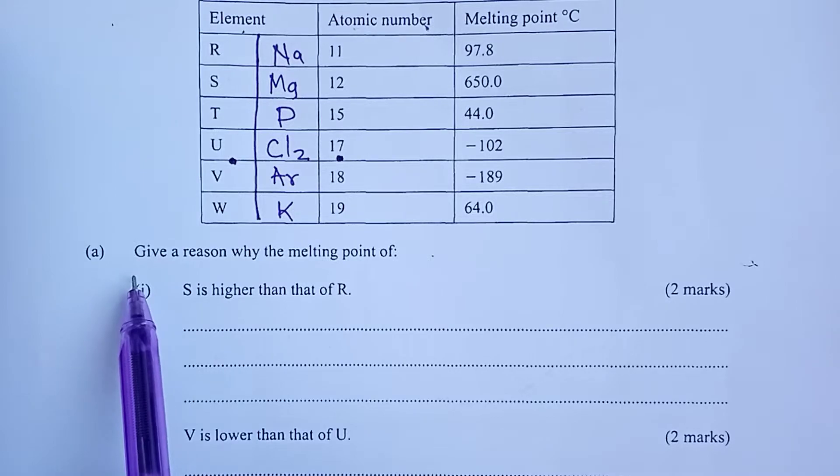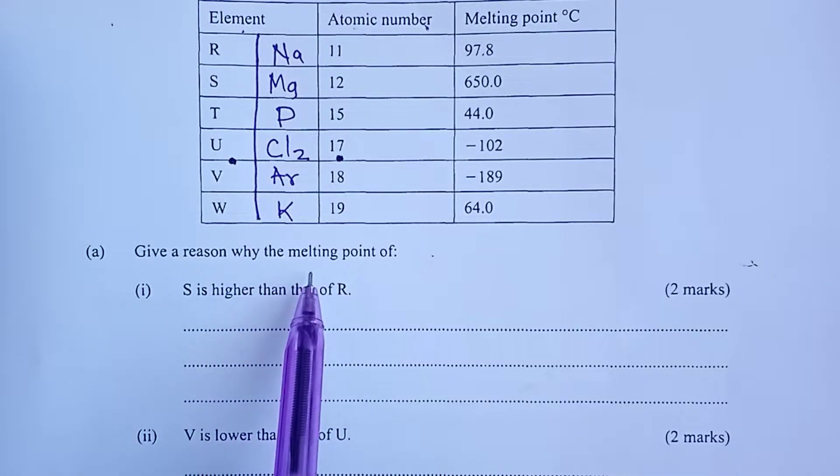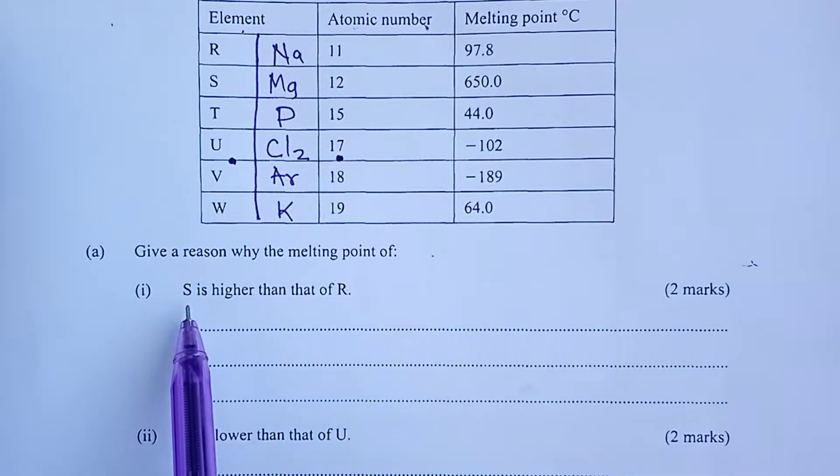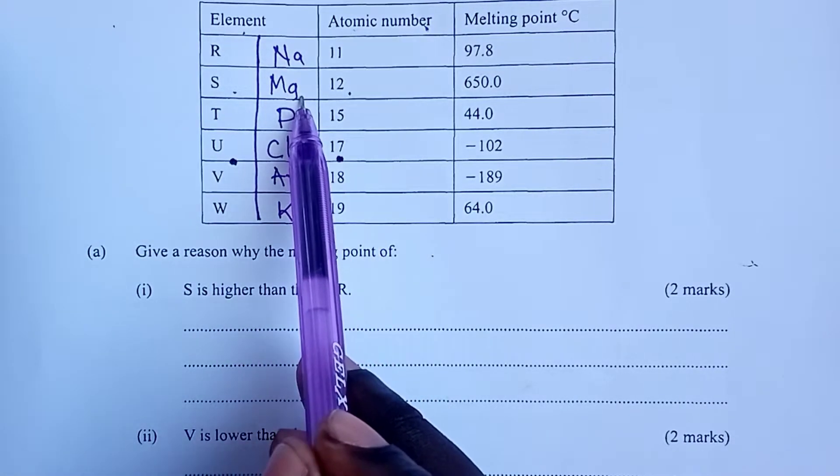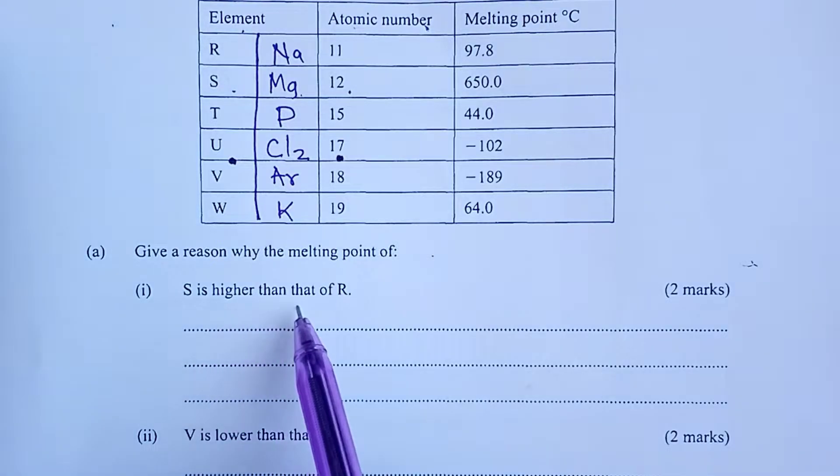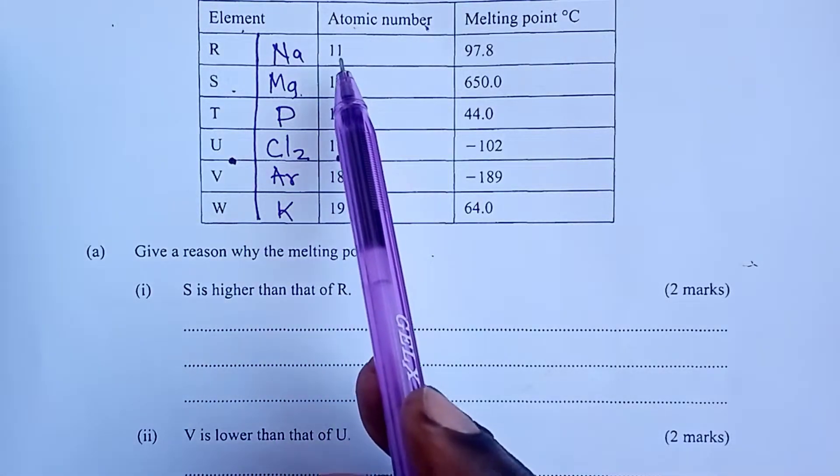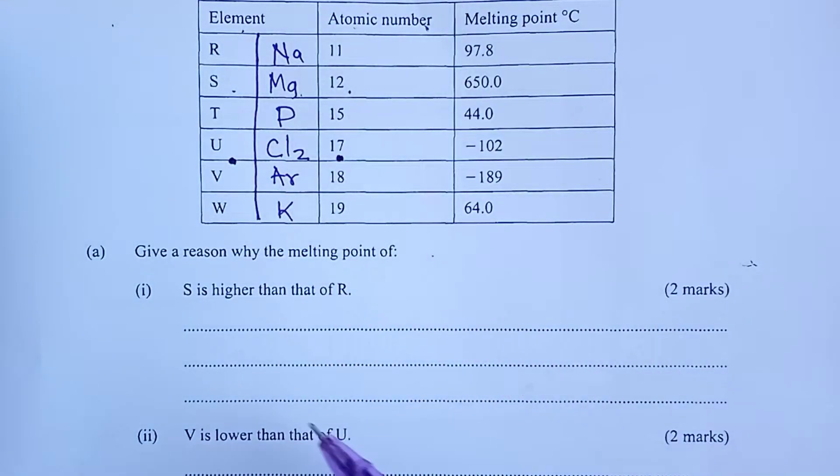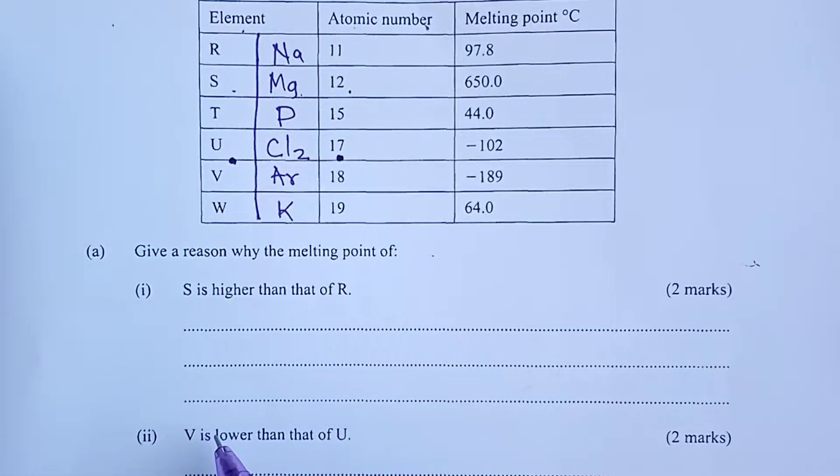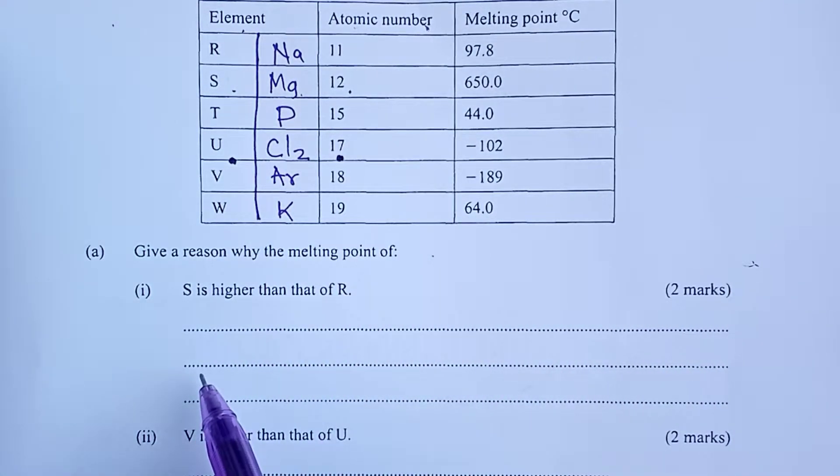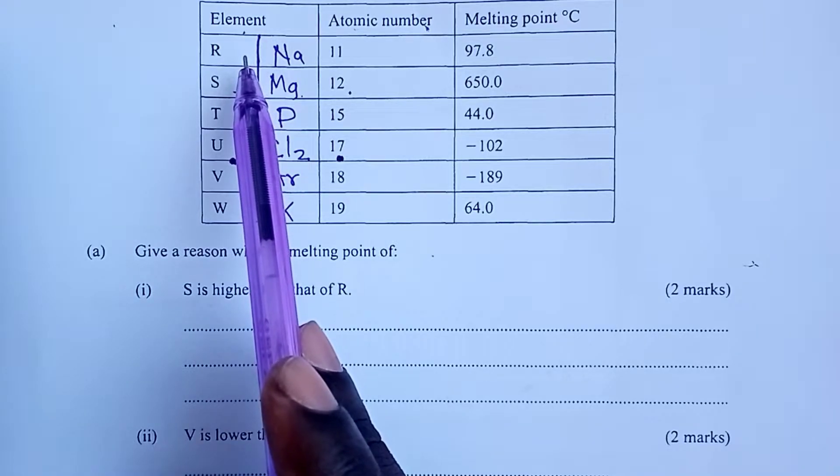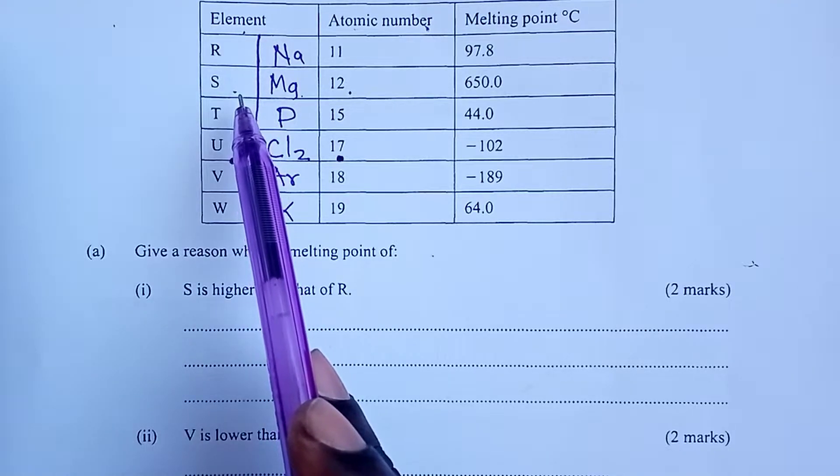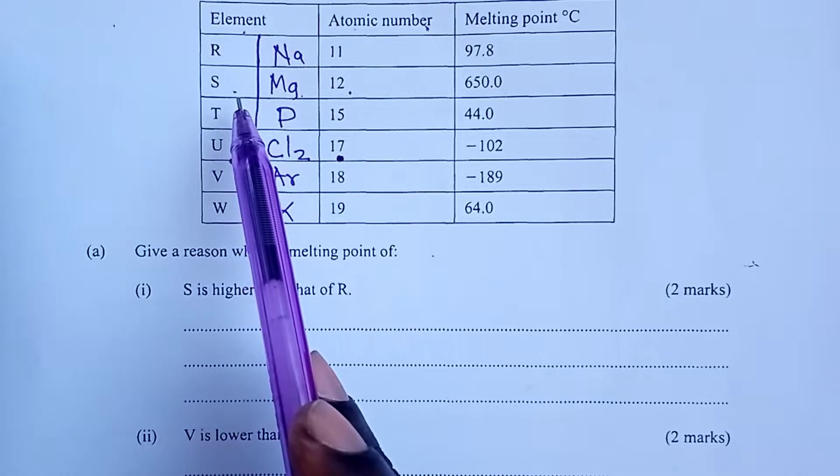The first question was: give a reason why the melting point of S—S is atomic number 12, which is magnesium—is higher than that of R. R is atomic number 11, which is sodium. From the understanding of the periodic table, we know that R belongs to the alkali metals group, and S belongs to the alkaline earth metals group.